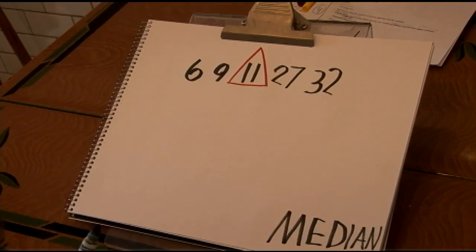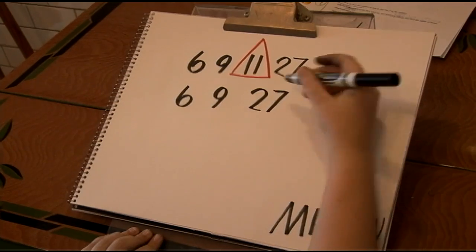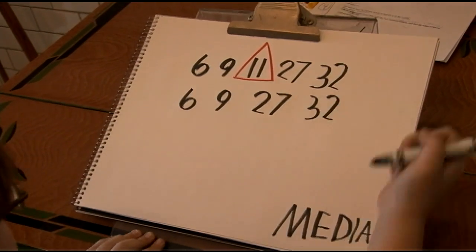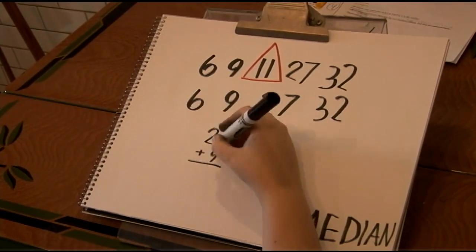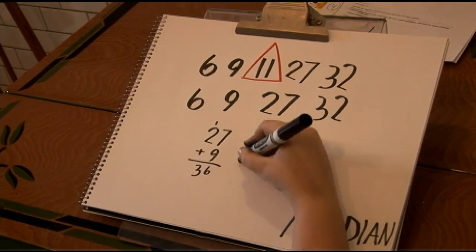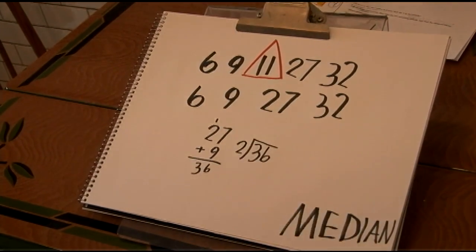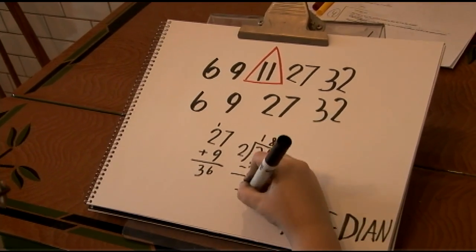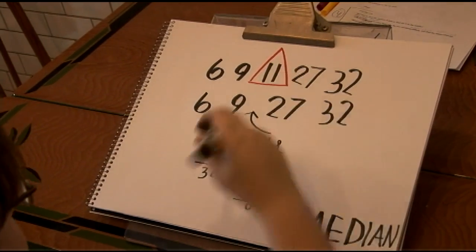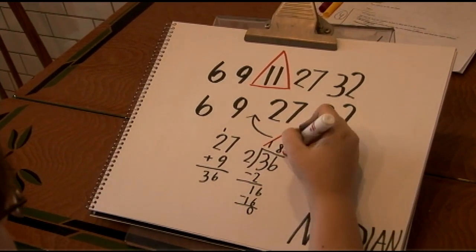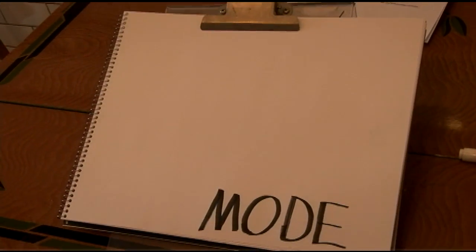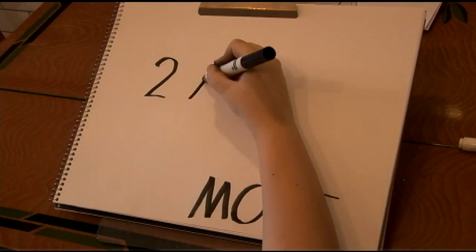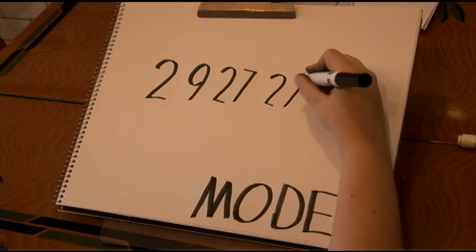The way to find the median is just to find the number in the middle. If the number of numbers in the data set is even, then take the two numbers closest to the middle and find the mean of those. Now let's move on to the mode.